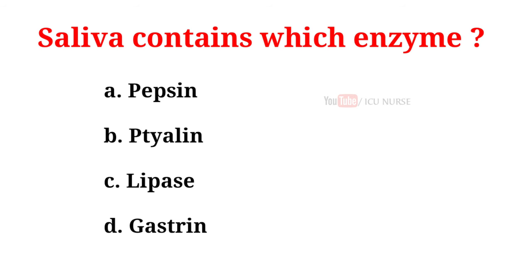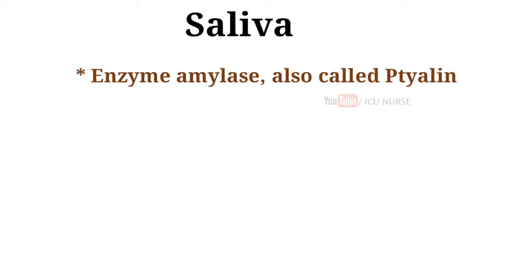Saliva contains which enzyme? A. Pepsin. B. Tyalin. C. Lipase. D. Gastrin. And the correct answer is B. Tyalin. Saliva contains the enzyme amylase, also called tyalin, which is capable of breaking down starch into simpler sugars such as maltose and dextrin that can be further broken down in the small intestine. About 30% of starch digestion takes place in the mouth cavity.